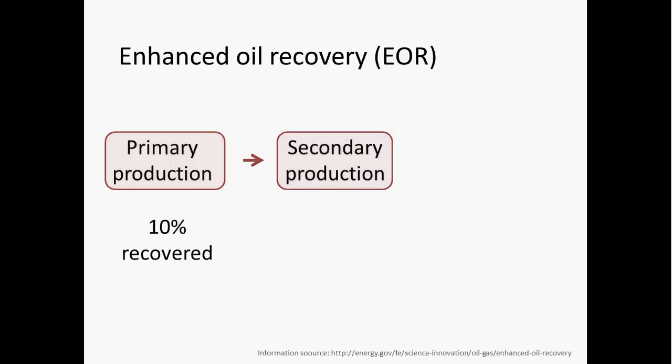After that, it starts to get a little more difficult to squeeze the oil out of the reservoir, so we have to do a little bit more work. This phase of production is referred to as secondary recovery or secondary production. Techniques that extend a field's productive life during secondary production include injecting water or gas to help displace oil and push it towards a production well. As a result of this, we usually get about 20 to 40 percent of the oil that was initially present — so about 10 to 30 percent more after primary production.